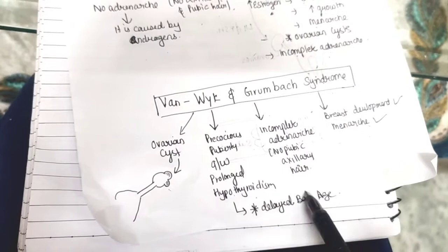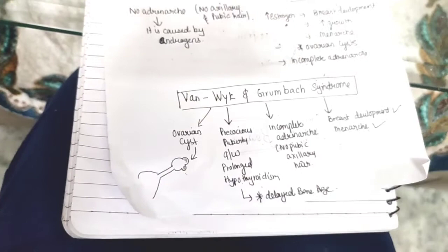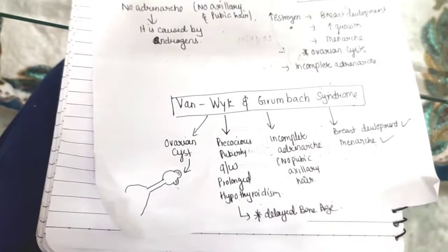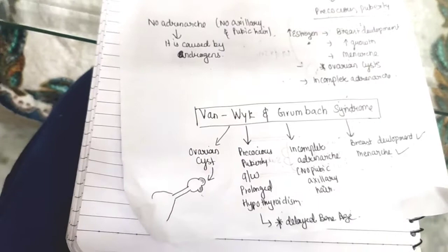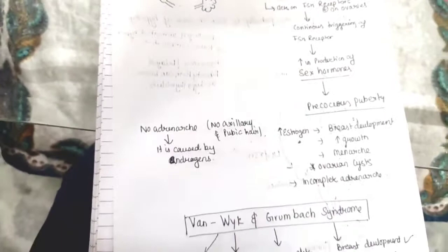One important thing that will help you delineate is delayed bone age. In hypothyroidism, we know there is always delayed bone age. When you investigate the patient and see the x-ray for bone age, there will be delayed bone age and increased TSH suggesting hypothyroidism. The patient will be presenting with breast enlargement and uterine bleeding, but you will not find pubic and axillary hair. This is one hint that you will get.